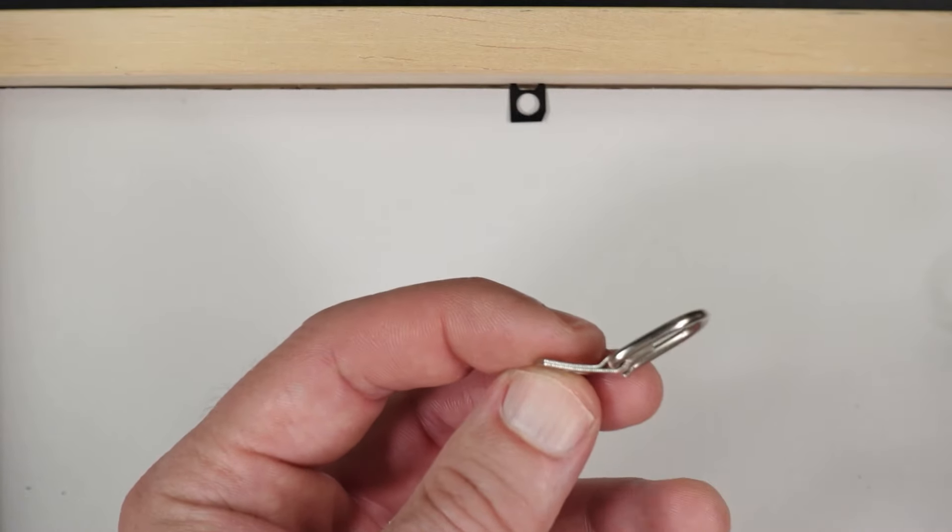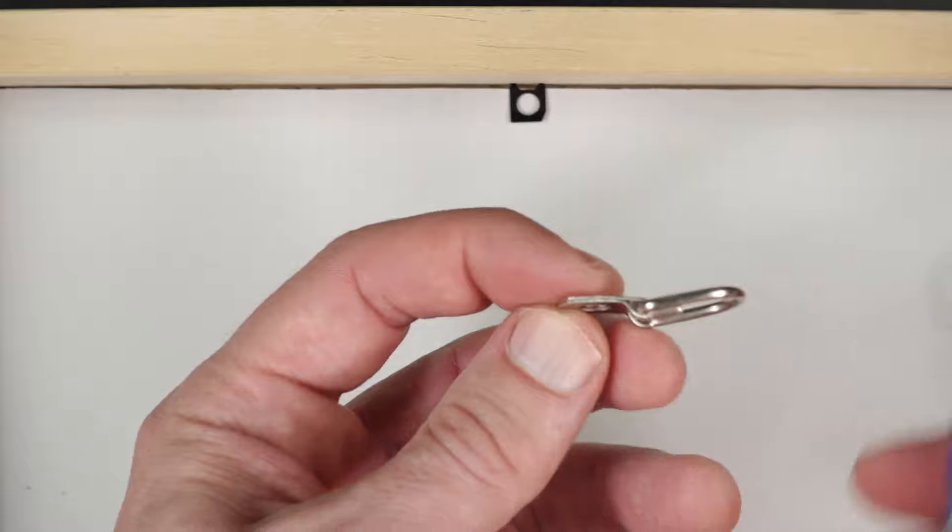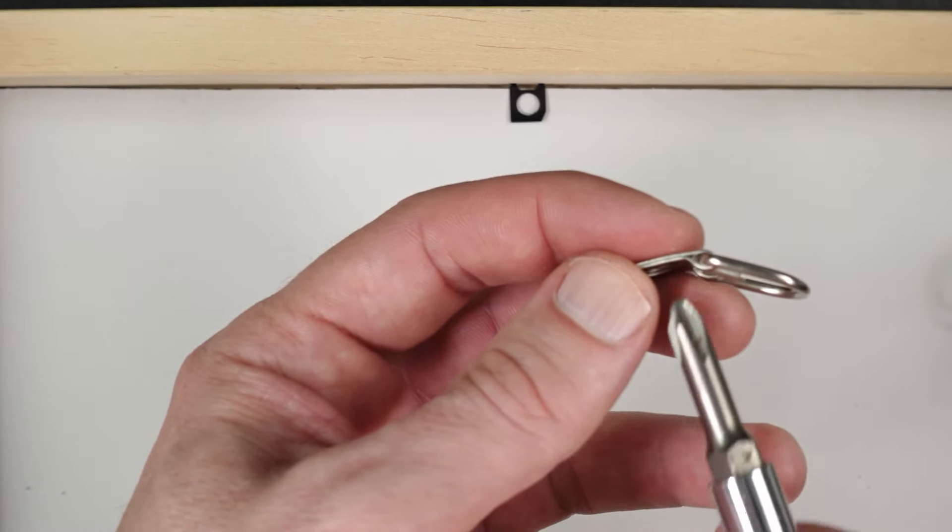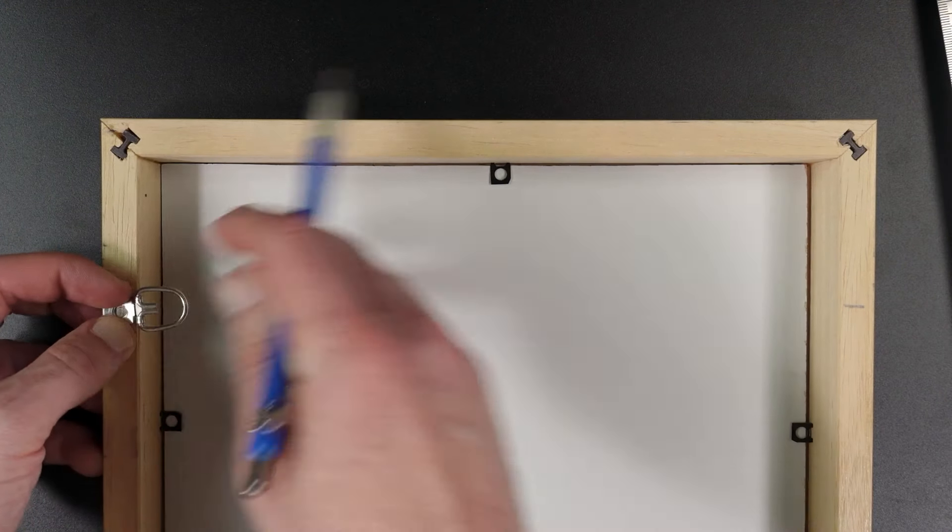So you want to place the d-ring hanger so that this flat side is facing down. Otherwise the bulky part, if you put it face down, would make this part stand up at an angle and it wouldn't look right. So I'll just draw a circle where I want to drill a hole. You might be able to get away without drilling a hole, but I do it just so that you don't run the risk of cracking the frame.